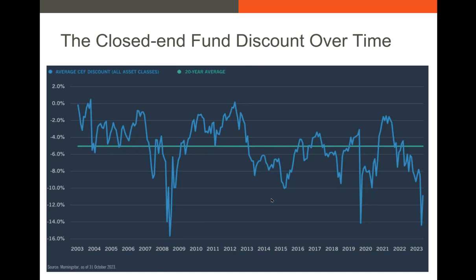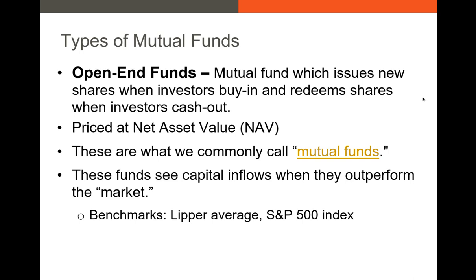Now let's talk about the more prominent version: open-end mutual funds. The big difference between closed-end and open-end funds is that open-end funds allow investors to always buy shares directly from the mutual fund. The fund sells shares directly to the investor, and if the investor wants to sell, they sell those shares back to the mutual fund itself. These open-end funds can create as many shares as they want, and because the fund is just increasing or decreasing shares, they're usually priced at NAV.